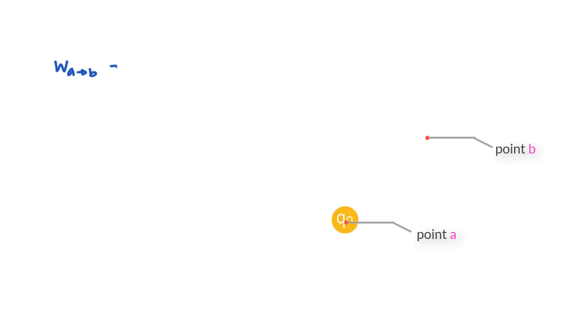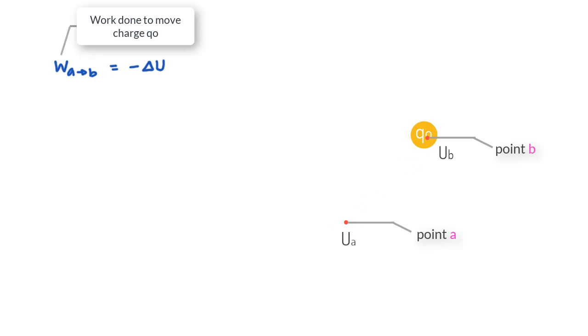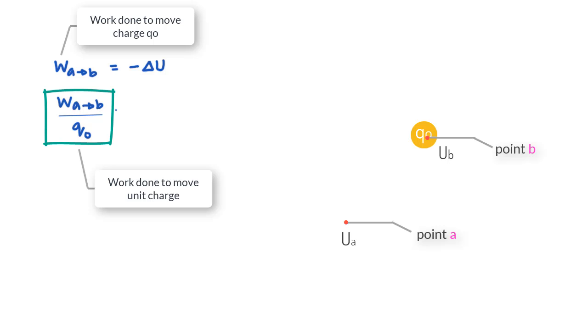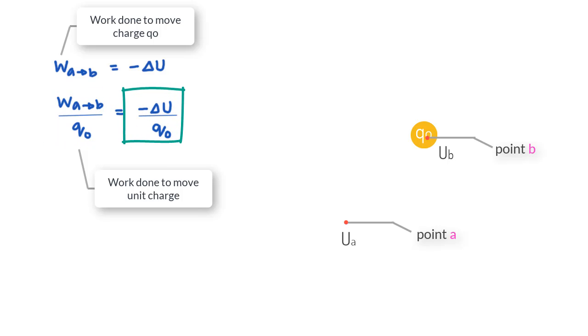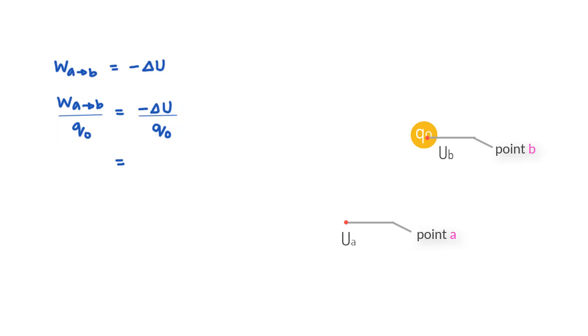Let us use the equation that connects work done in moving a charge Q0 from A to B as change in potential energy, and write it for a unit charge by dividing both sides by Q0. The left side now gives the work done per unit charge instead of work done in moving the full charge Q0 from A to B. The right-hand side gives the change in potential energy for a unit charge moving from A to B.